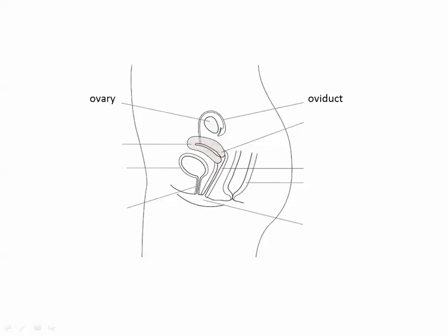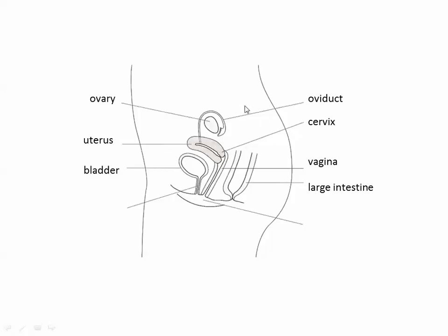The fallopian tube is named after G. Fallopio, some Italian biologist. The uterus is the area where the implanted egg will actually develop and turn into an embryo and a fetus. We have the cervix — the cervix is the opening from the uterus into the vagina. The vagina is the area where sperm is deposited during copulation. The bladder is shown here for location and does not contribute to reproduction. The large intestine is just to show relative positioning. The vulva is the opening or the front of the entire female reproductive system. The urethra is just the tube that allows urine to pass through. So there are three openings in this area of the female body.